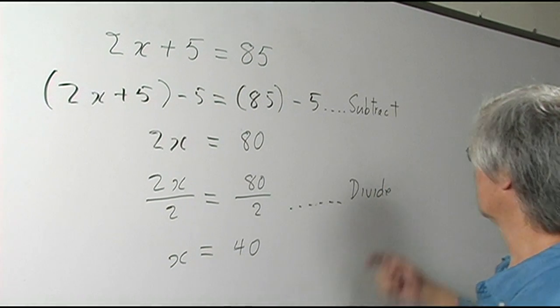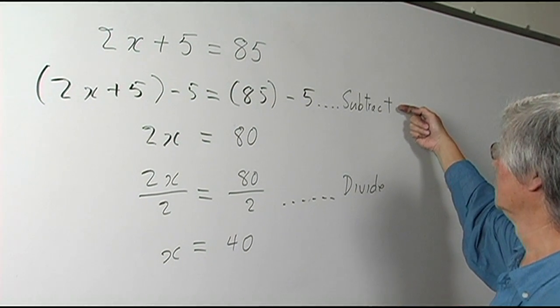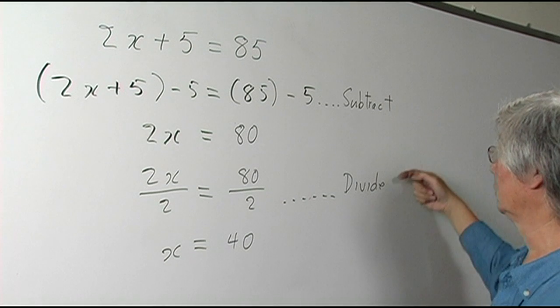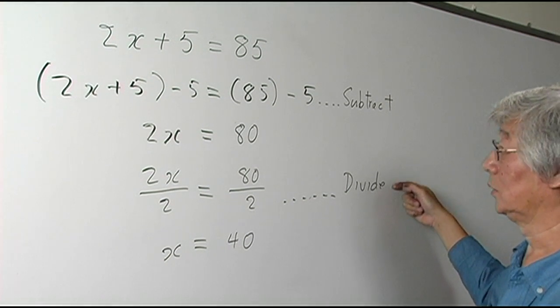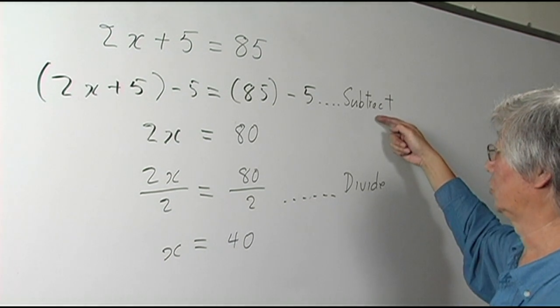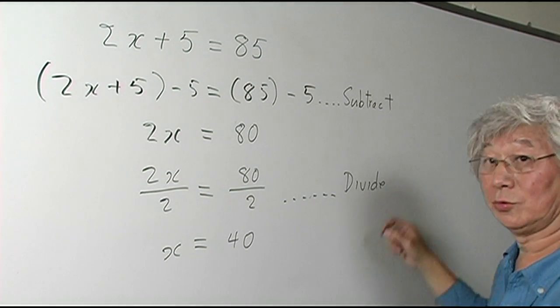So the two operations are subtraction and division. That's why it's called a two-step equation.